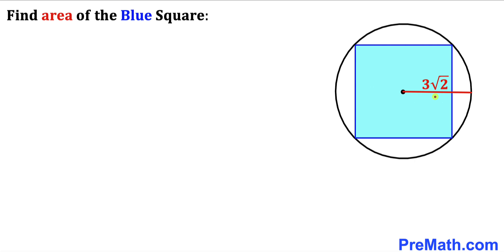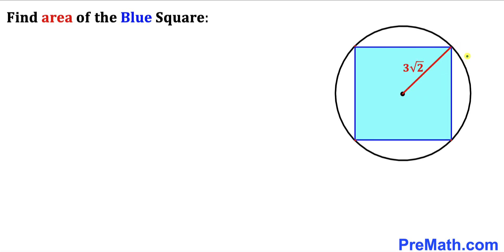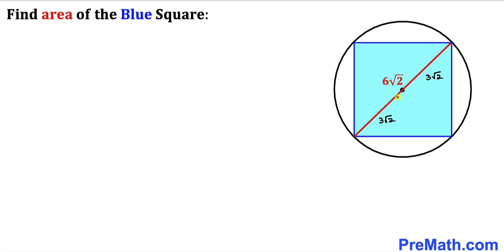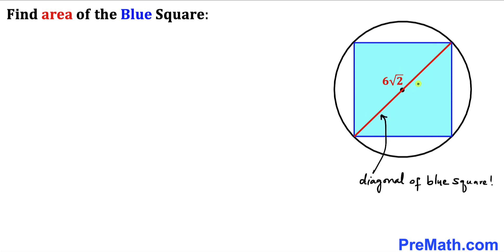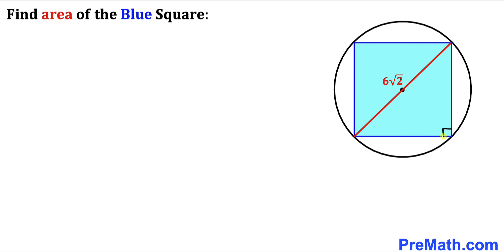We can see that this is the radius of the circle, and this could also be the radius of this very same circle. Our radius is 3√2. If we extend this radius all the way across, this whole distance is going to be twice the radius, so it's going to be 6√2. Moreover, this diameter of the circle is the same as the diagonal of this blue shaded square.